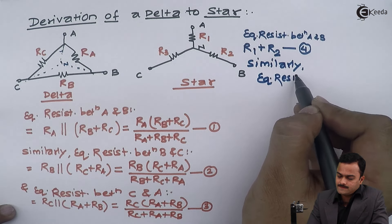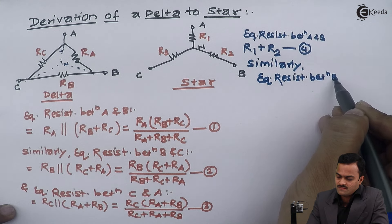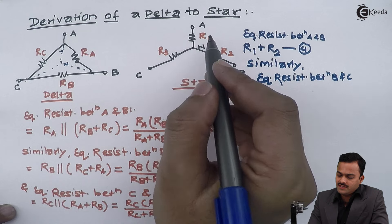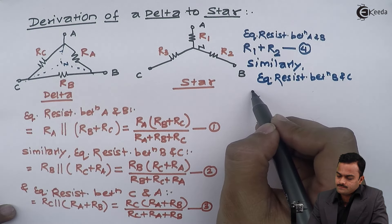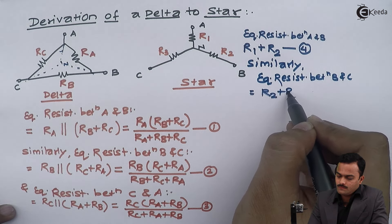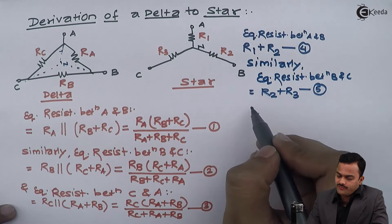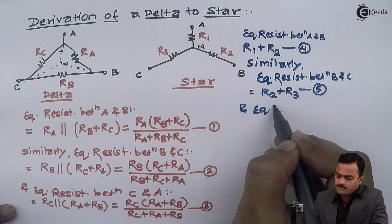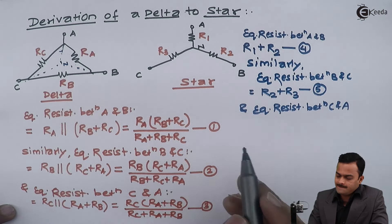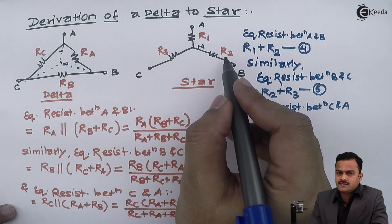Similarly, equivalent resistance between B and C: A is redundant, R1 is redundant, so it becomes equal to R2 plus R3. And finally, between C and A, B is redundant so R2 is redundant, giving R1 plus R3.